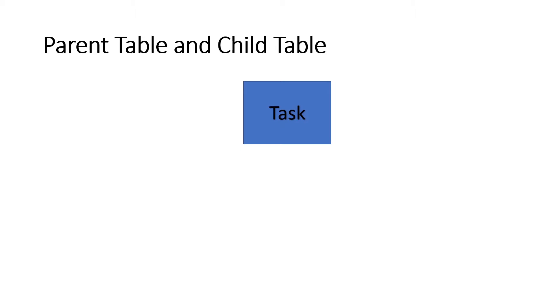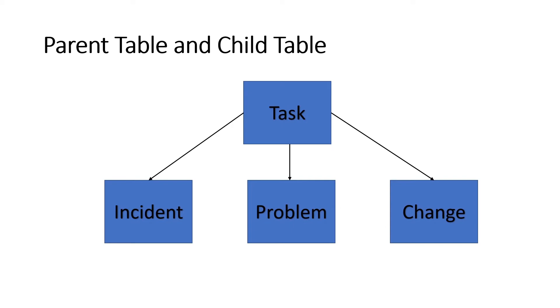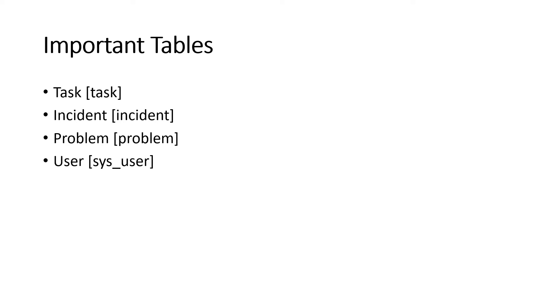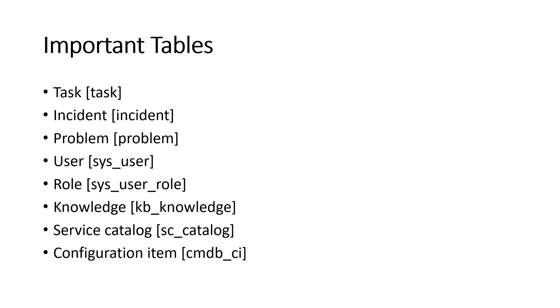We also have parent and child tables. The task table is extended by incident, problem, and change — we saw 43 tables extend task. So task is the parent table, and incident, problem, and change are child tables because they extend from task and inherit its fields. Some important tables in ServiceNow include task, incident, problem, change, user, role, knowledge, service catalog, and configuration item (CMDB) tables.